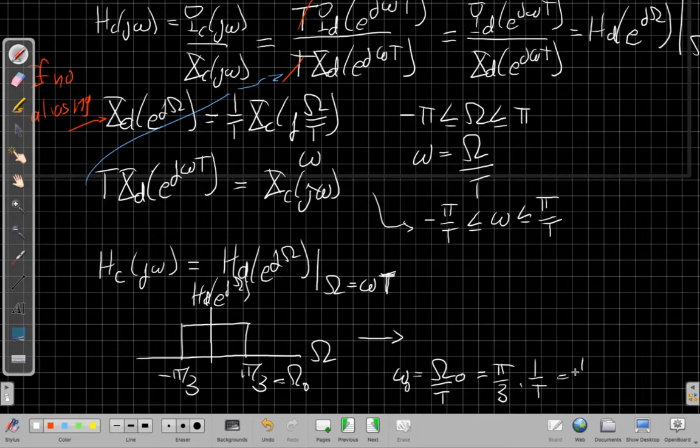So I have π/3 times 300, so that's 100π or 2π times 50. So this is my effective continuous time filter is also a low pass filter...